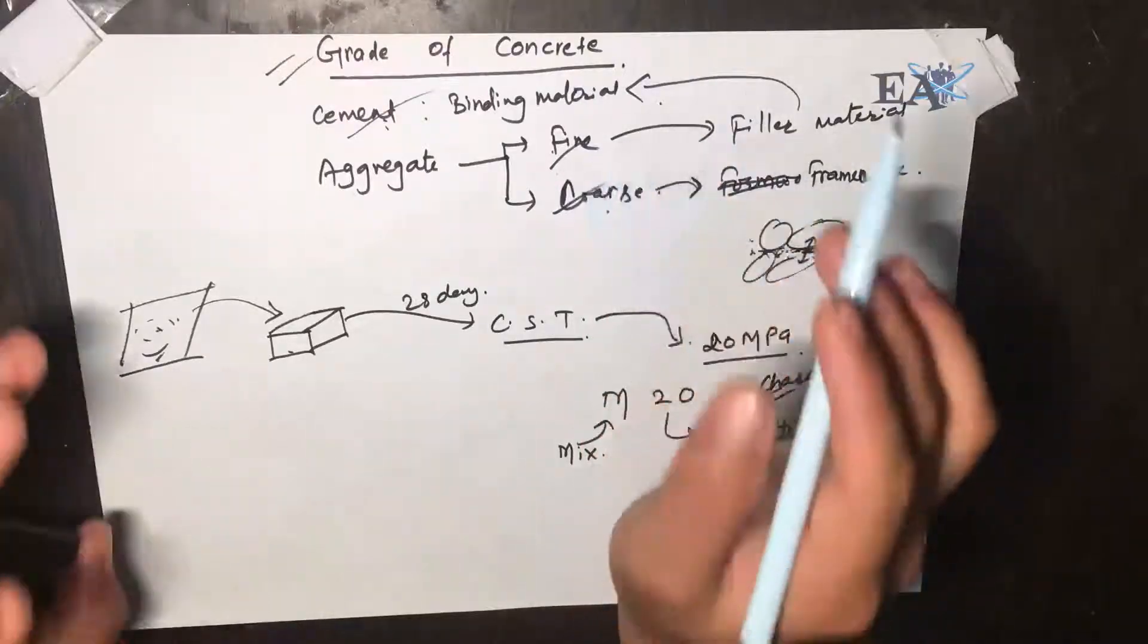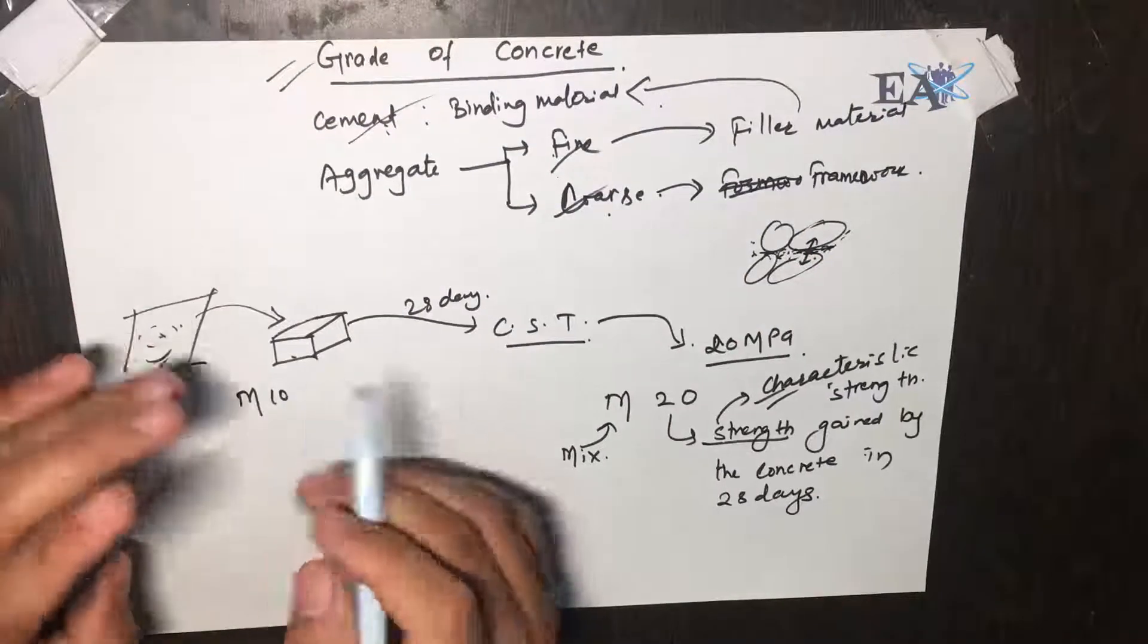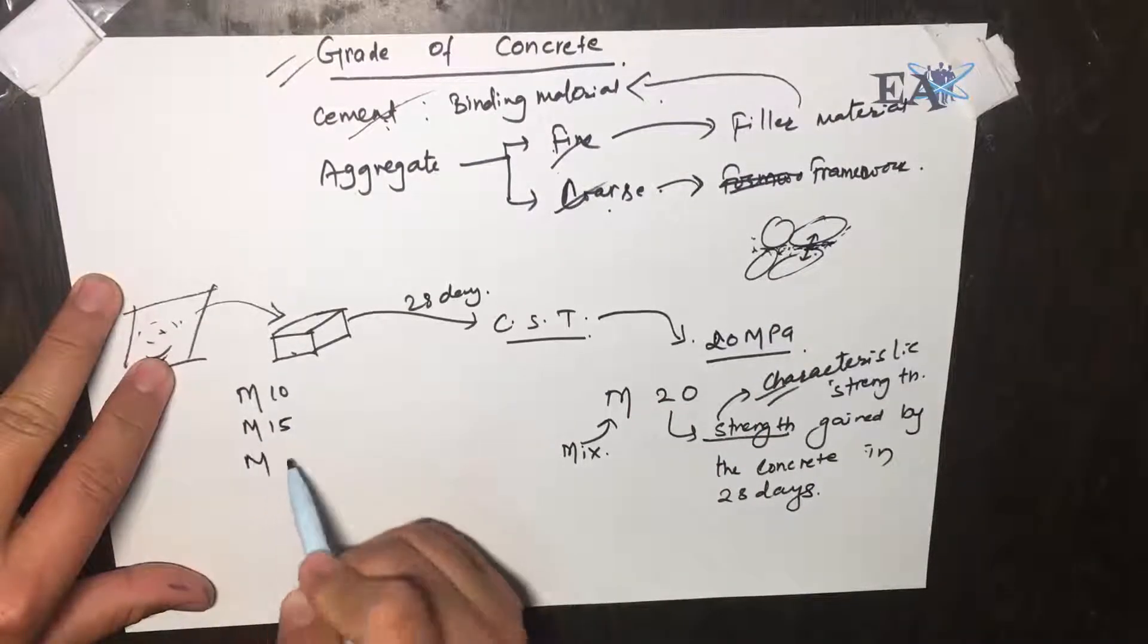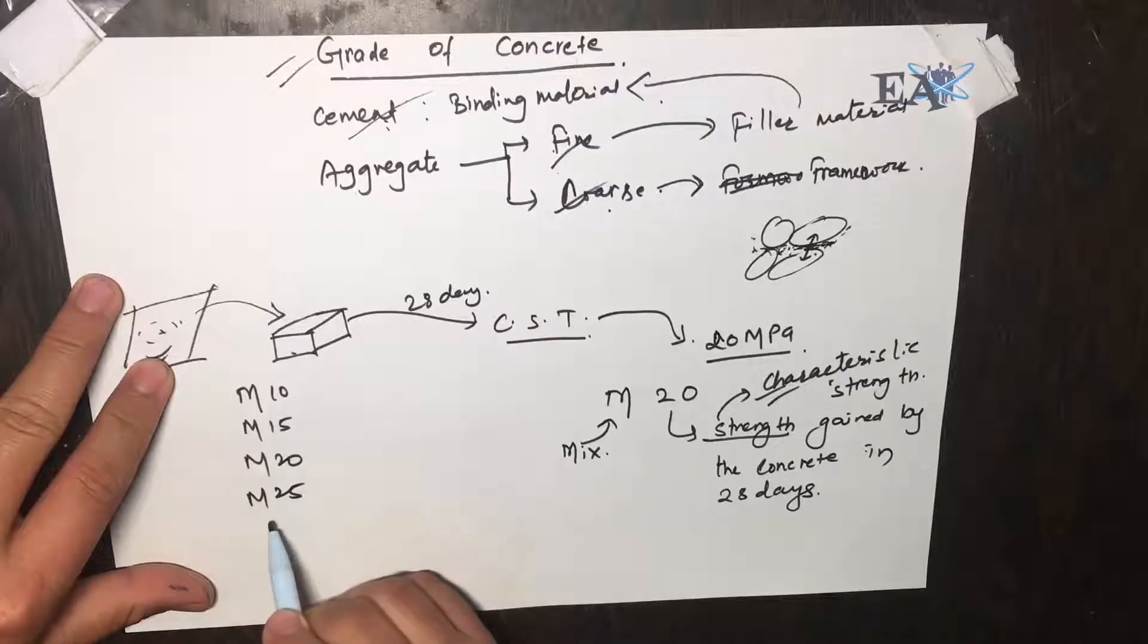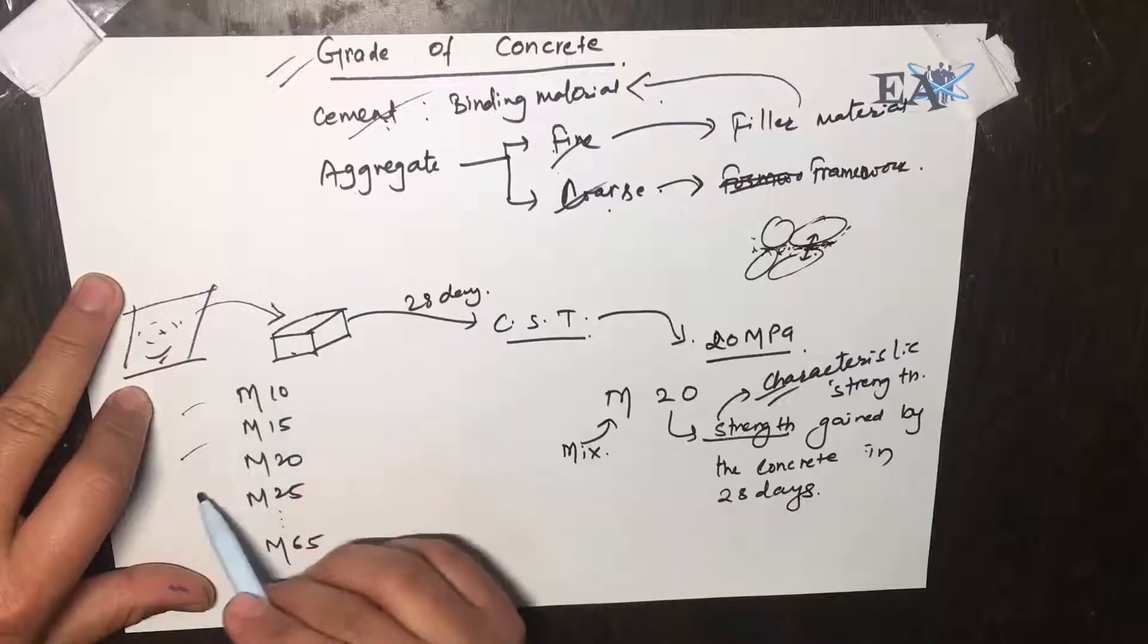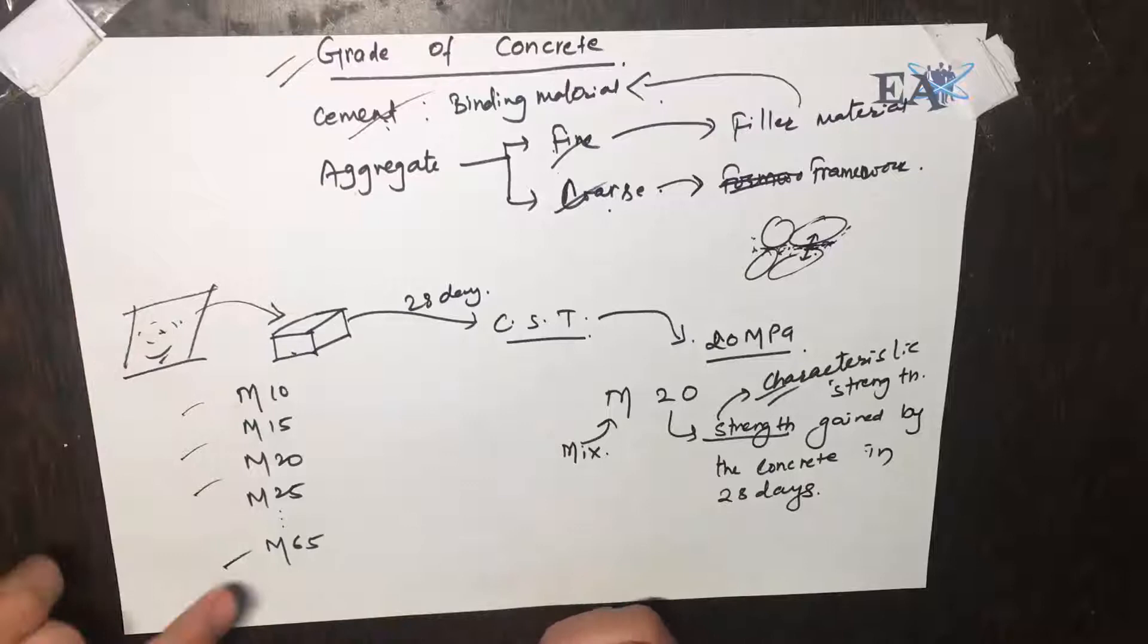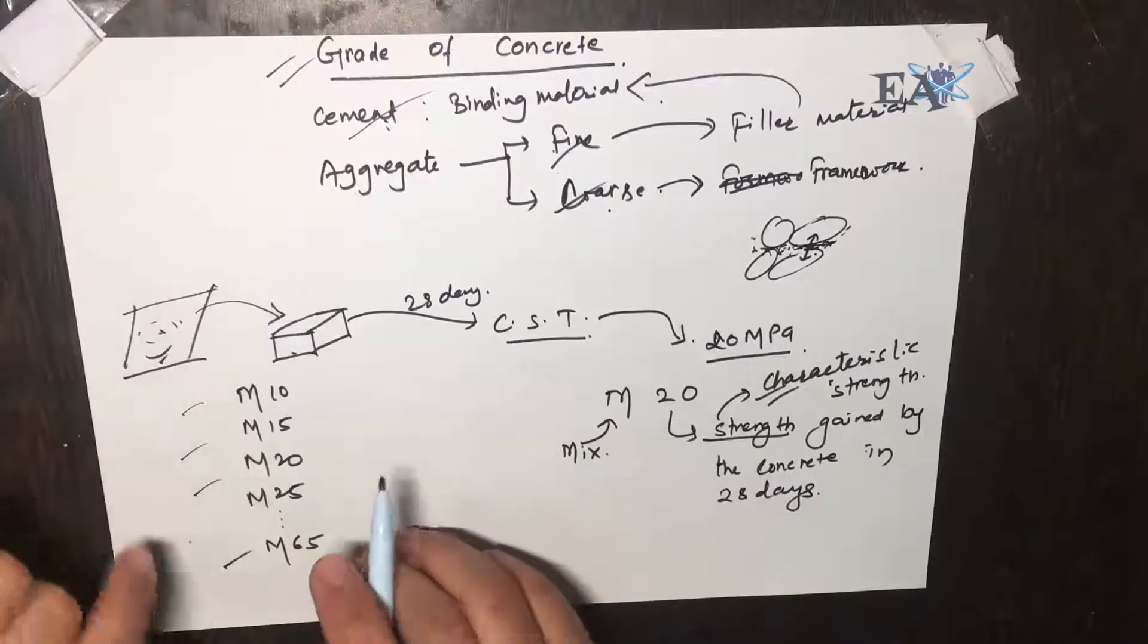we got different grades of concrete. For example, we got M5, M7.5, then we got M10, M15, M20, M25, and we got like M65. These grades of concrete—if we change this proportion we get the grade of concrete accordingly. What is that proportion and how we proportionate that, we'll see in the next video.